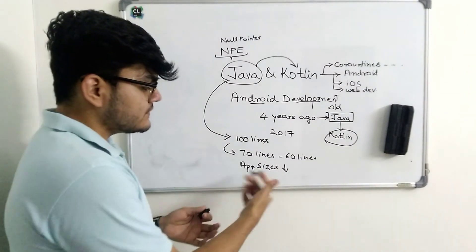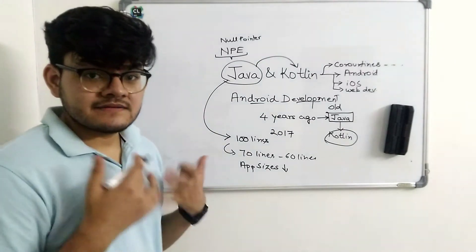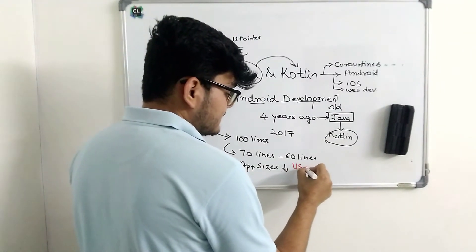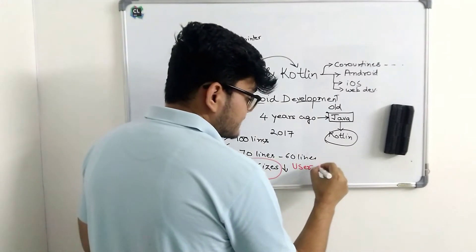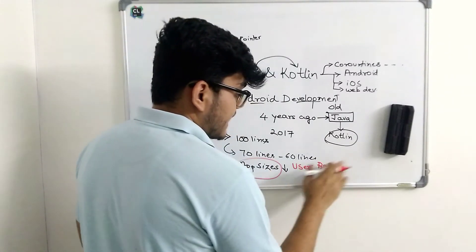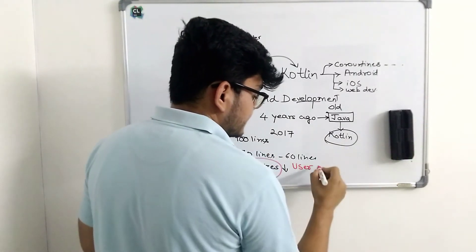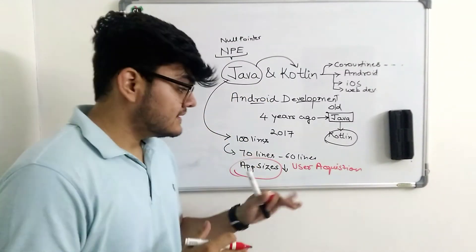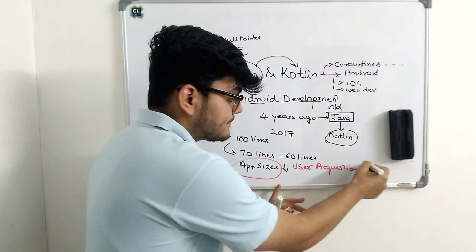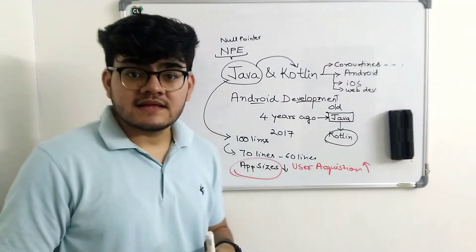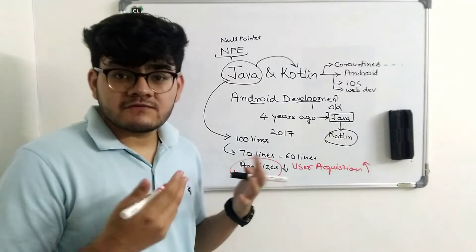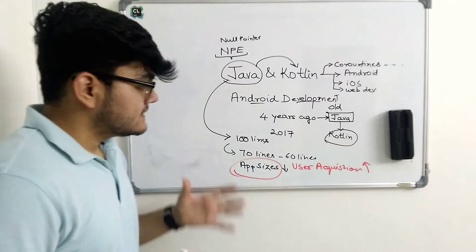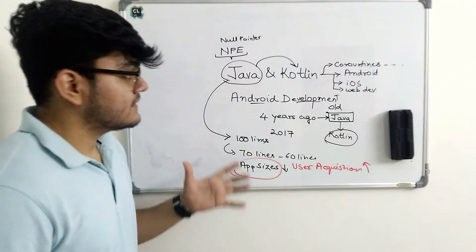The practical impact of smaller app size relates to user acquisition. It was observed that if an app's size is smaller, more users will download it. If the app size is larger, the user acquisition rate is lower. That's why a lot of people chose Kotlin over Java. This is the theoretical part, which actually holds true.